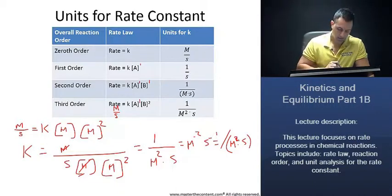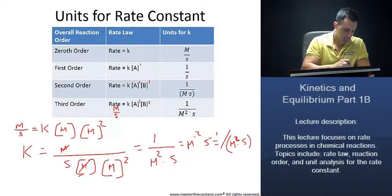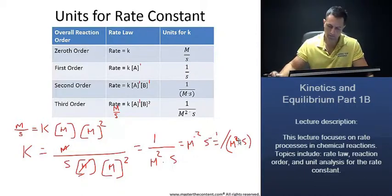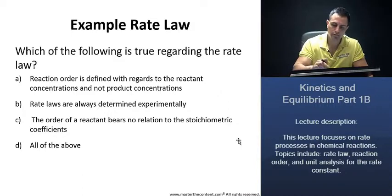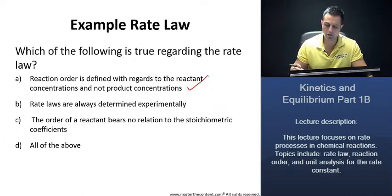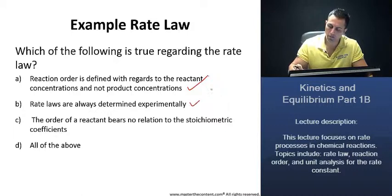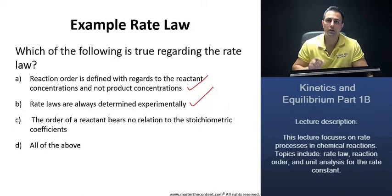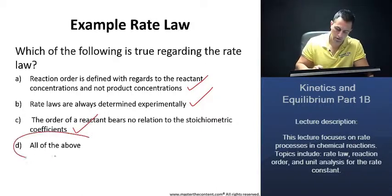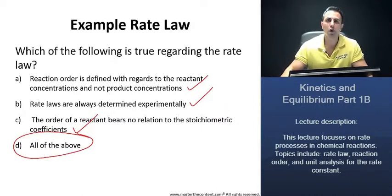Now let's move on to our next slide. Let's take a look over here. Example of rate law. Which of the following is true regarding the rate law? Reaction order is defined with regards to the reacting concentrations and not product concentrations. Yes, that's true. We just saw that. Rate laws are always determined experimentally. Yes, that's also true. It's important to remember. The order of a reactant bears no relation to the stoichiometric coefficients. Yes, we just mentioned that as well. So here our answer would be D, since all of the above are correct.